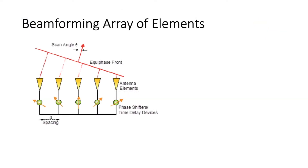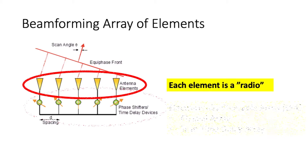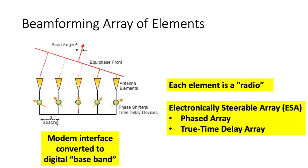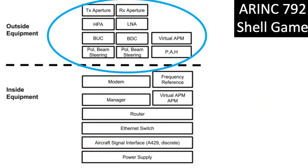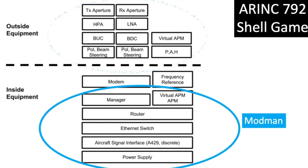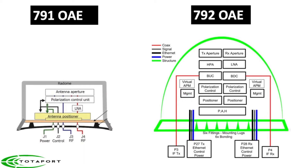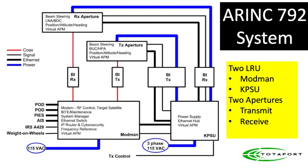A new type of antenna is entering the market: a beamforming array of elements, where each element is a radio. Beamforming involves some form of electronically steerable array (ESA) — either a phased array or a true time-delay array — and a digital baseband modem interface. These new integrated antennas move almost everything outside; whatever remains goes in the MODMAN except for the power supply, which we call the KPSU. This, then, is the ARINC 792 system, which still has four penetrations but they are smaller than ARINC 791.